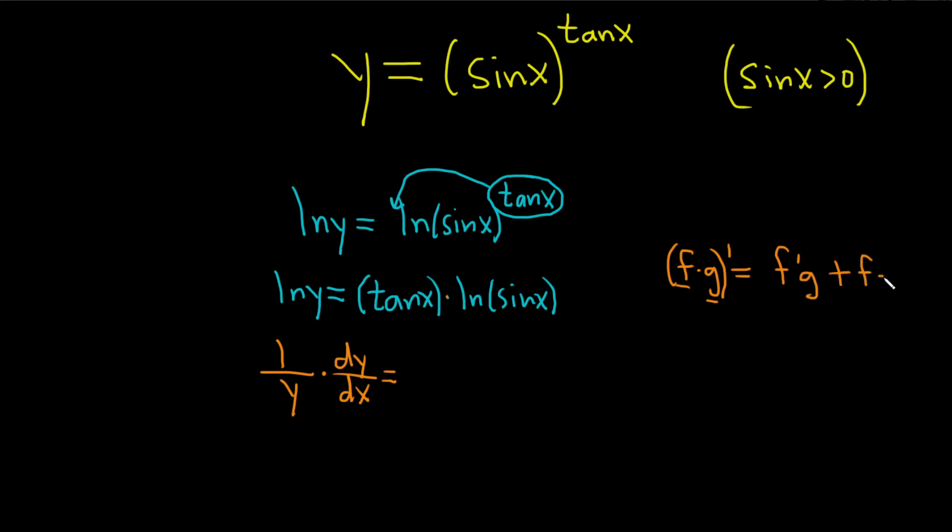times the derivative of the second. So here it's the second, which is secant squared, that's the derivative of the first, times the second, plus the first, so tangent x, times the derivative of the second. So the derivative of the natural log of sine, that's just 1 over sine, times the derivative of the inside, the inside function is sine, its derivative is cosine.